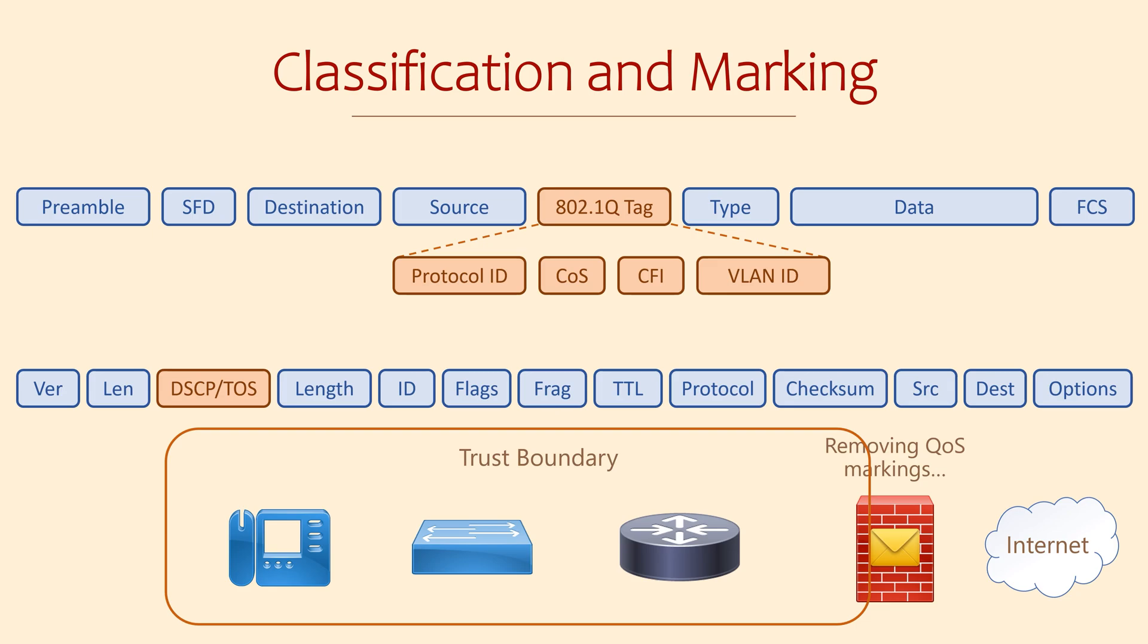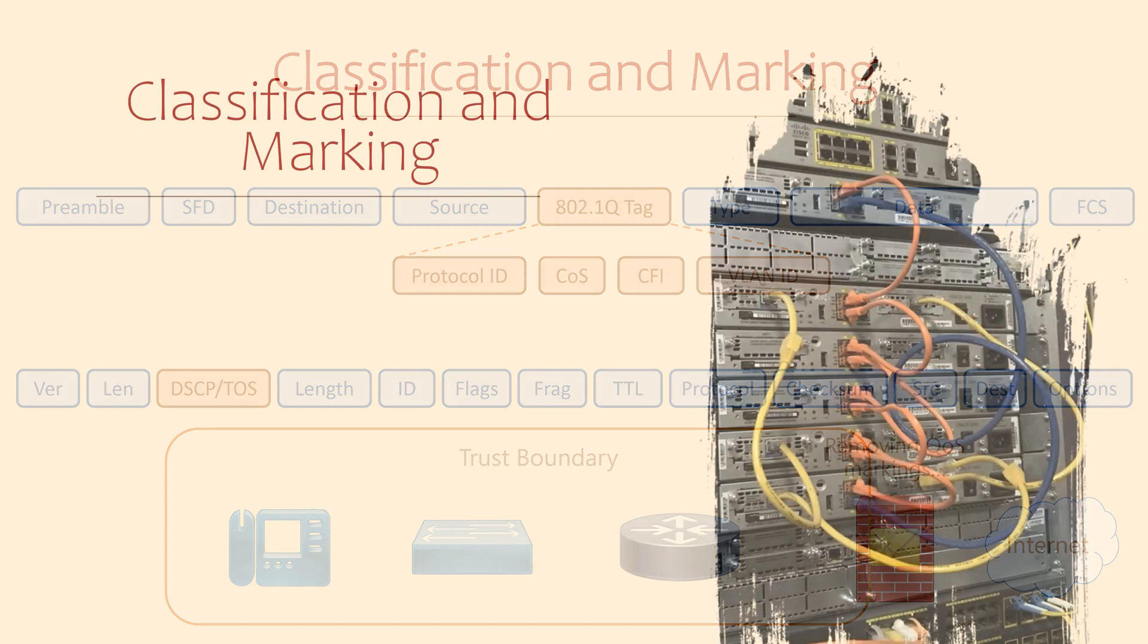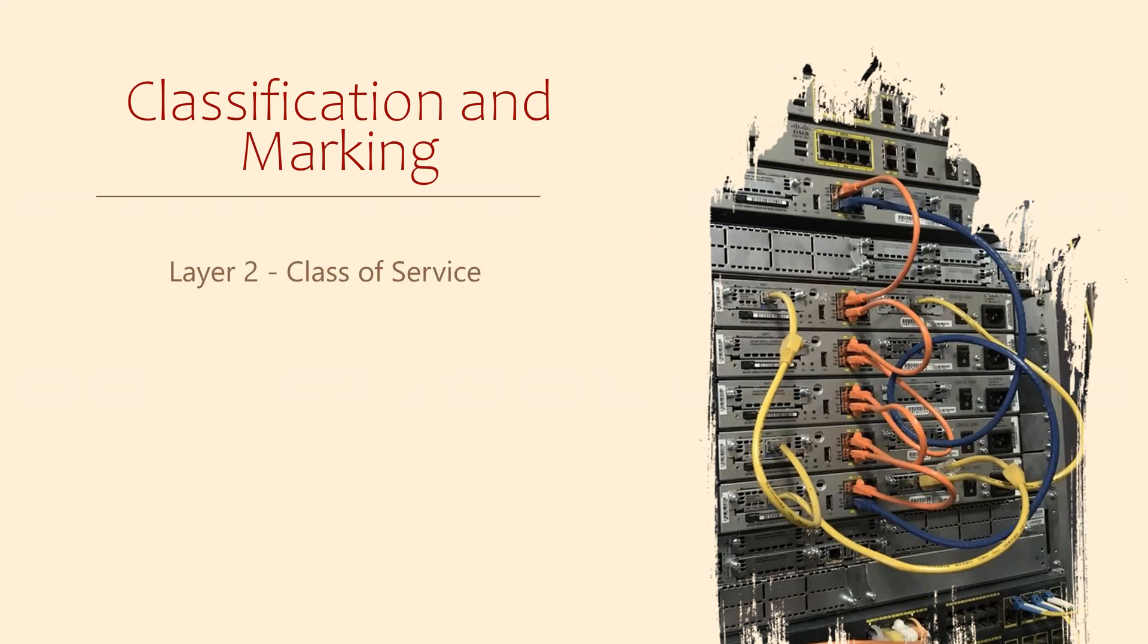There are three different ways we can mark packets and frames. At layer 2, frames passing over a trunk link can have a marking added to the Ethernet header. We call this class of service. At layer 3, there are two options: IP Precedence and DSCP. Both of these add a value in the IP header. IP Precedence has been out of date for some time, leaving DSCP as the preferred choice.